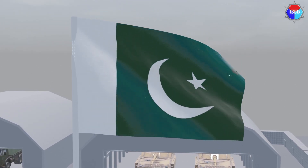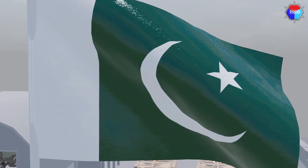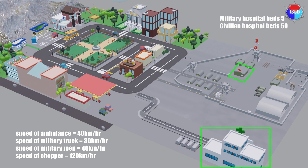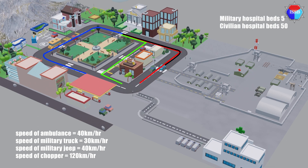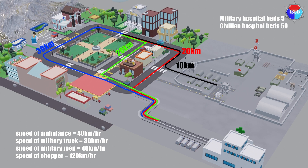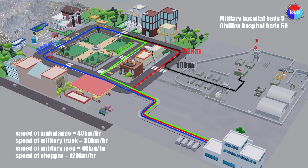Available resources: There are five ambulances, each capable of transporting two individuals at a speed of 40 kilometers per hour. A chopper is available accommodating six persons at once with a speed of 120 kilometers per hour. Four military trucks are available, each carrying 20 persons at 30 kilometers per hour. Two jeeps are also available with a capacity of 5 persons each at 40 kilometers per hour. There are 200 soldiers available at the military camp. Note: only ambulances are to be utilized for transporting the injured.